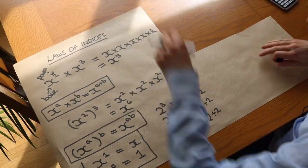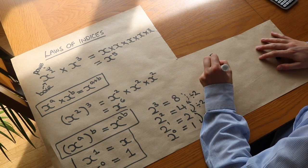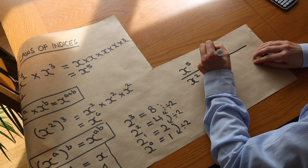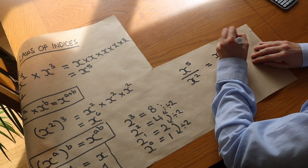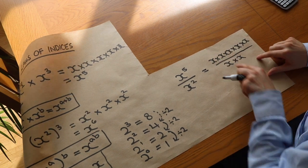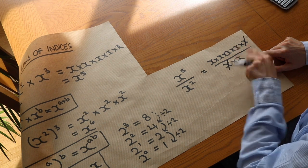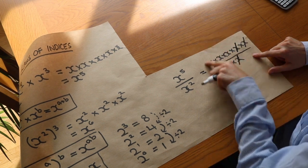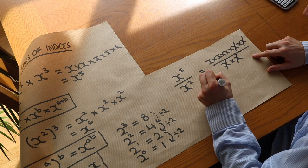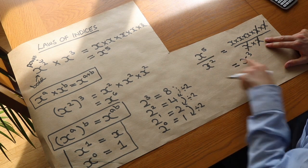There's one further law of indices. Let's simplify x to the power of five divided by x to the power of two. Writing it out explicitly: x to the five means x times x times x times x times x, and x squared means x times x. If we divide by one of the x's that makes one cancel, and dividing by another x gets rid of another one. So all we're left with is x cubed — that x and x cancelled out.